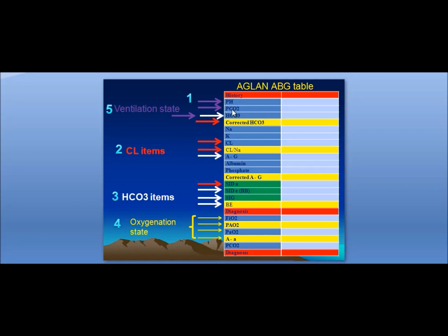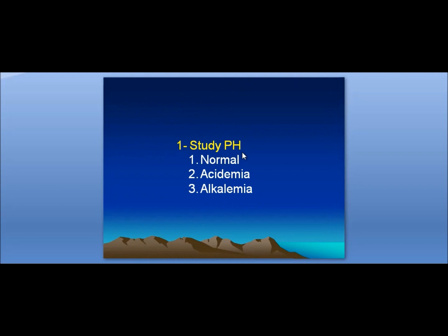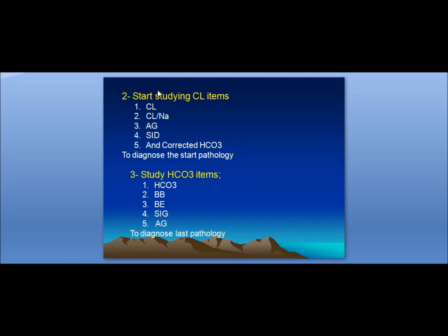To study the pH and bicarbonate: first, check if the pH is normal, acidemia, or alkalemia. Then study the chloride items — serum chloride, chloride-to-sodium ratio, anion gap, strong ion difference, and corrected bicarbonate. From these data you will arrive at the first diagnosis and first pathology. Then study the bicarbonate items — serum bicarbonate, buffer base, base excess, strong ion gap, and anion gap — which will give you the second diagnosis and second pathology.